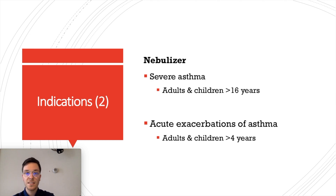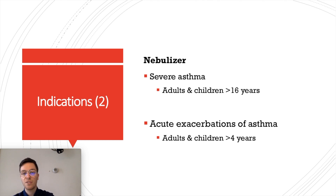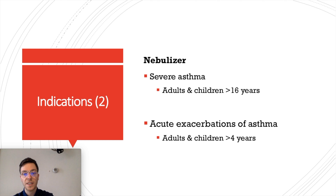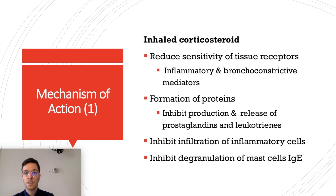The nebulizer can be used in the treatment of severe asthma in adults or children older than 16 years, and it can also be used in the treatment of acute exacerbation of asthma in adults and children older than 4 years old.